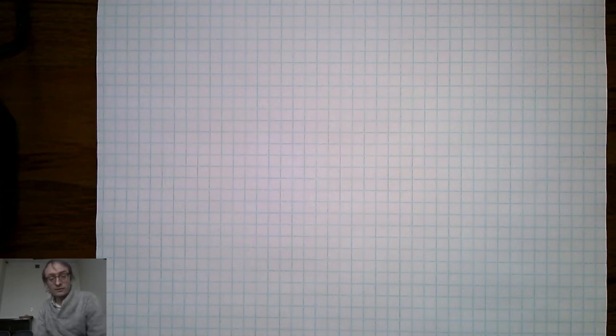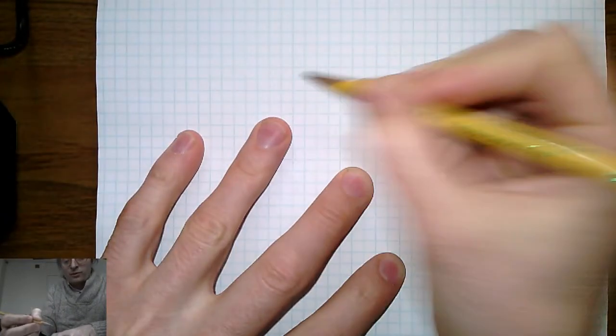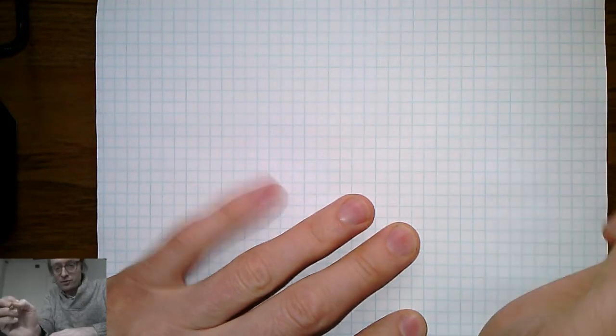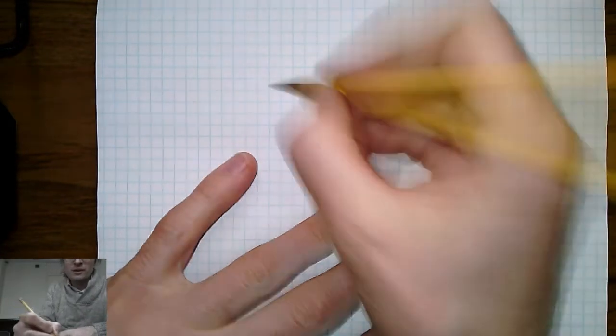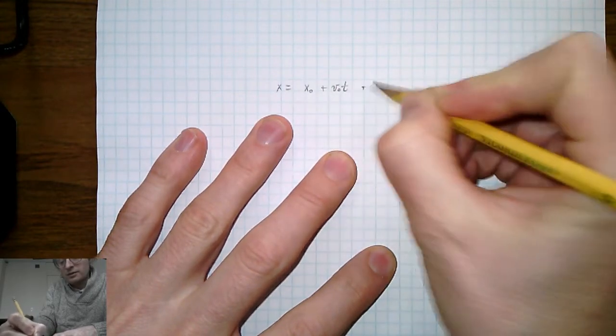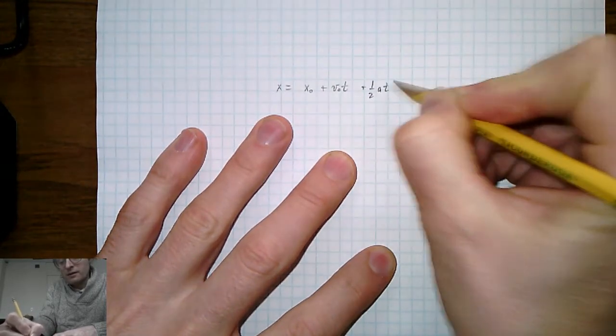Now that we have some basic ideas on the equation of motion, let's see what we can do with it. Here it is again. It's worth writing down many times so you remember it like your address or telephone number: x equals x0 plus v0 t plus one-half at squared.